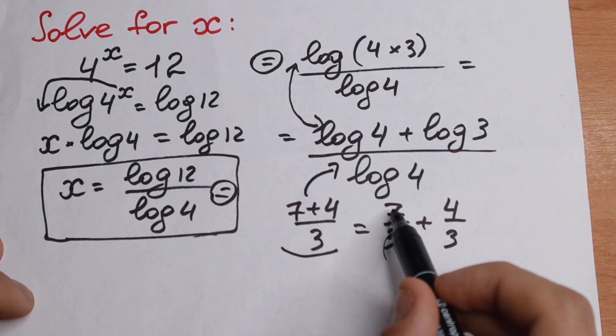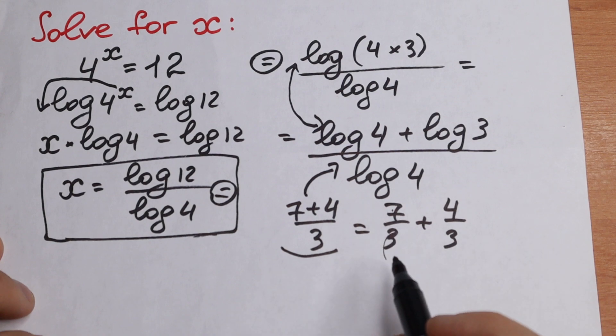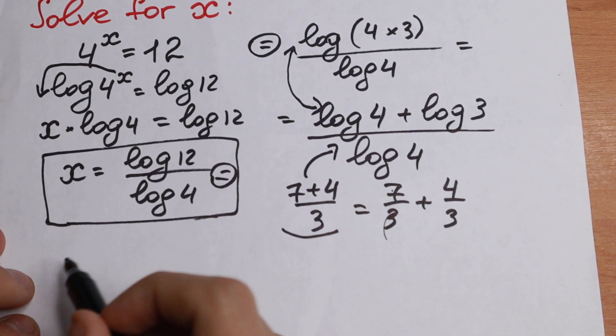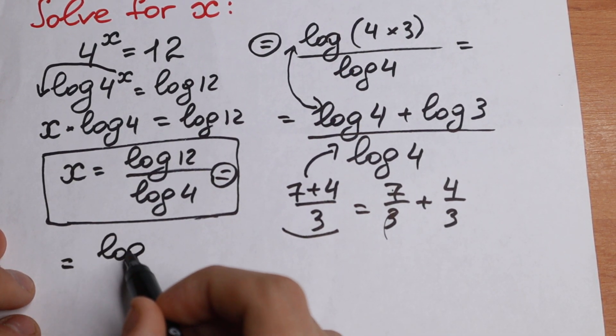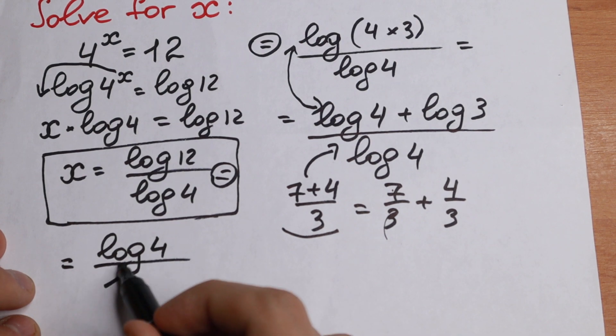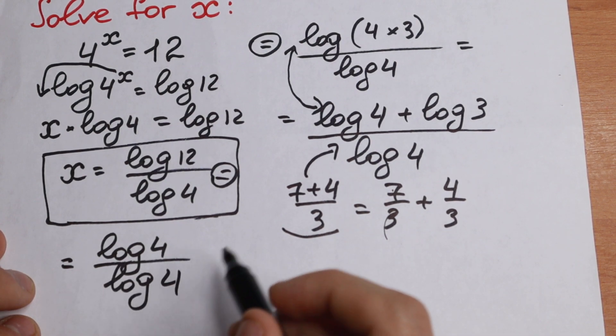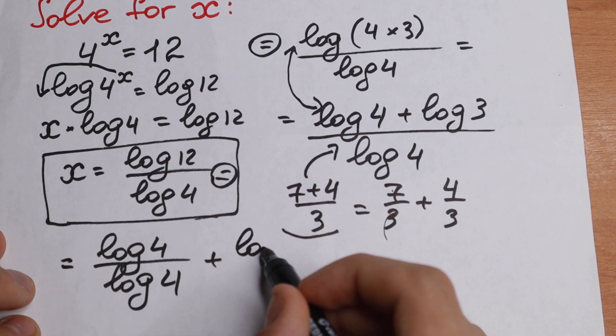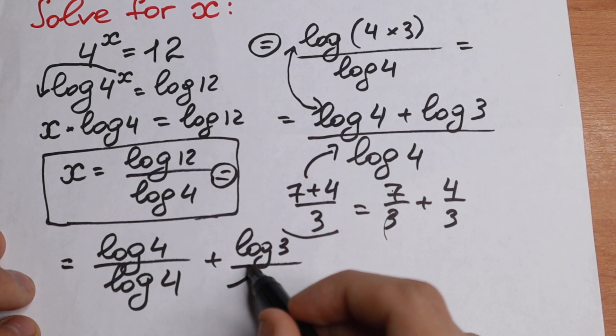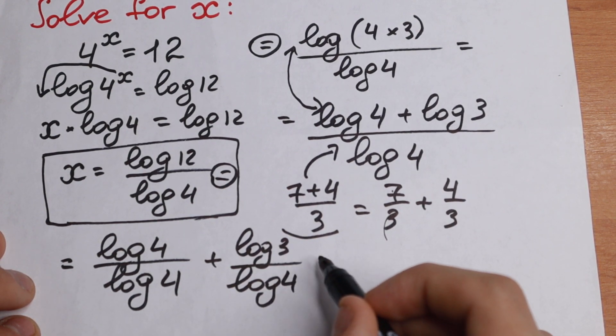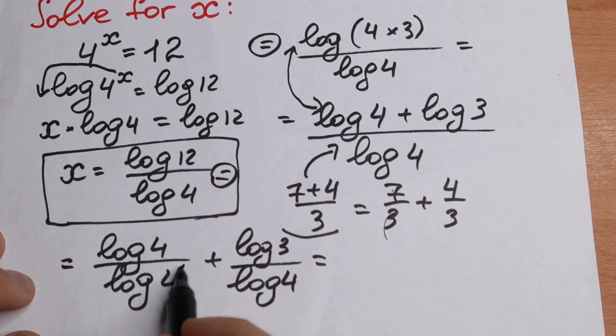This is the first one and we can divide both elements by this log 4. So we will have log 4 dividing by log 4 plus log 3 dividing by the same common denominator log 4. As you can see, this is the same.